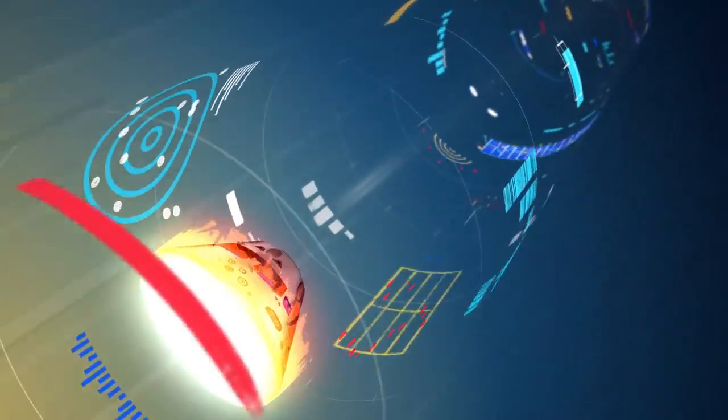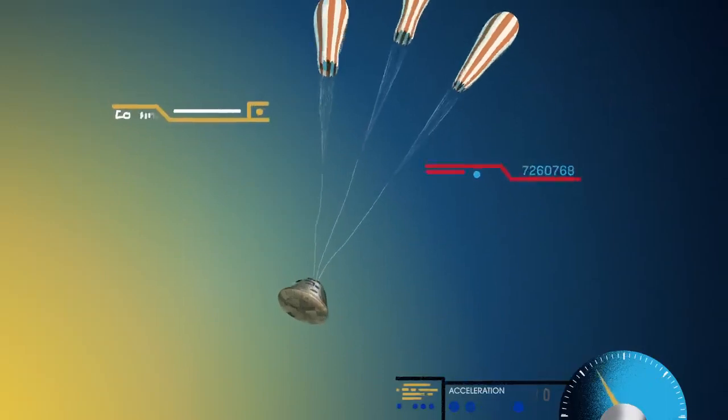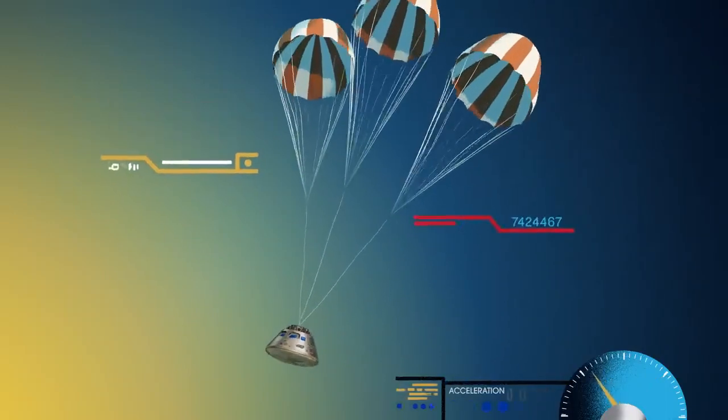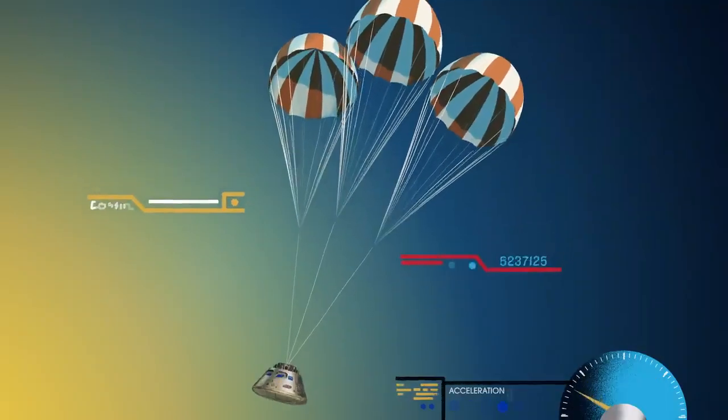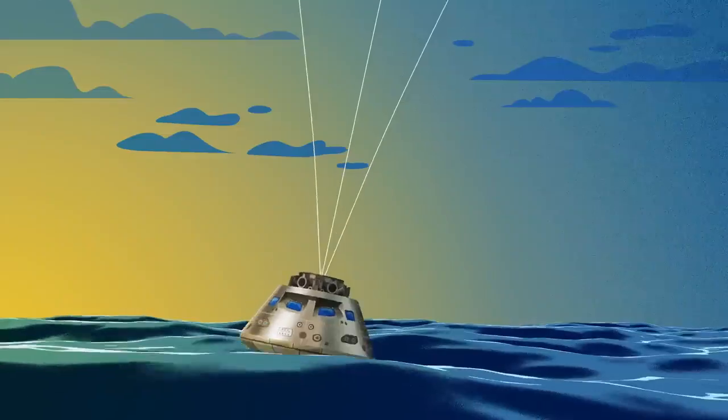With the Orion now at just 300 miles per hour, a series of parachutes uniquely tested and produced for this moment deploy, decelerating the craft to just 20 miles per hour for splashdown.